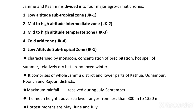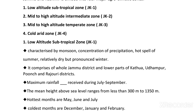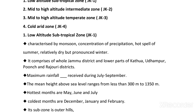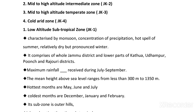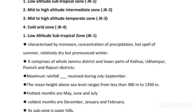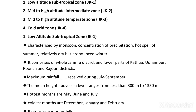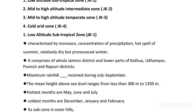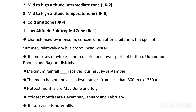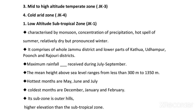The low altitude subtropical zone, also called JK1, is characterised by monsoon concentration of precipitation, hot spell of summer, relatively dry conditions, but pronounced winters. This zone comprises the whole Jammu district and the lower parts of Kathua, Udhampur, Poonch, and Rajouri districts. Maximum rainfall in this zone is received during July to September. The mean height above sea level ranges from less than 300 meters to 1315 meters.